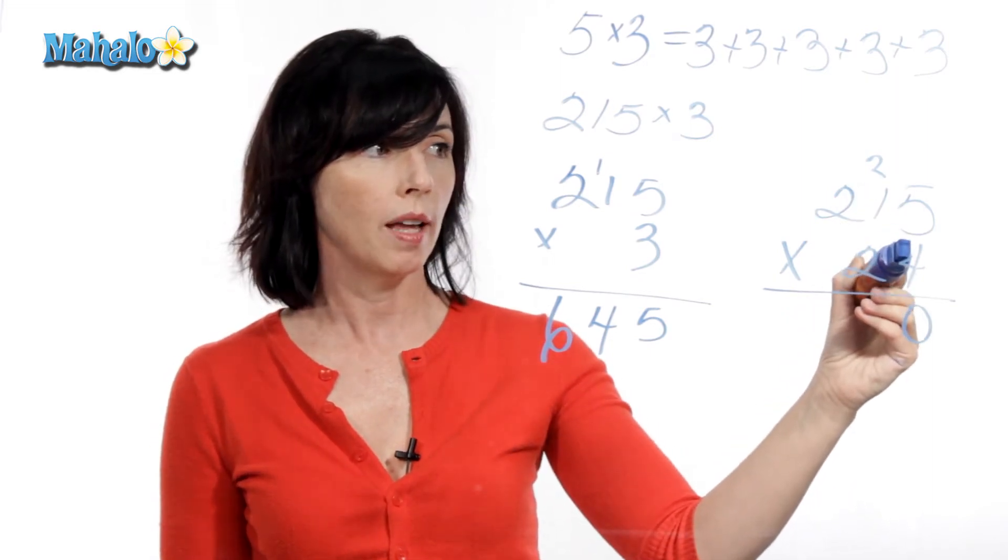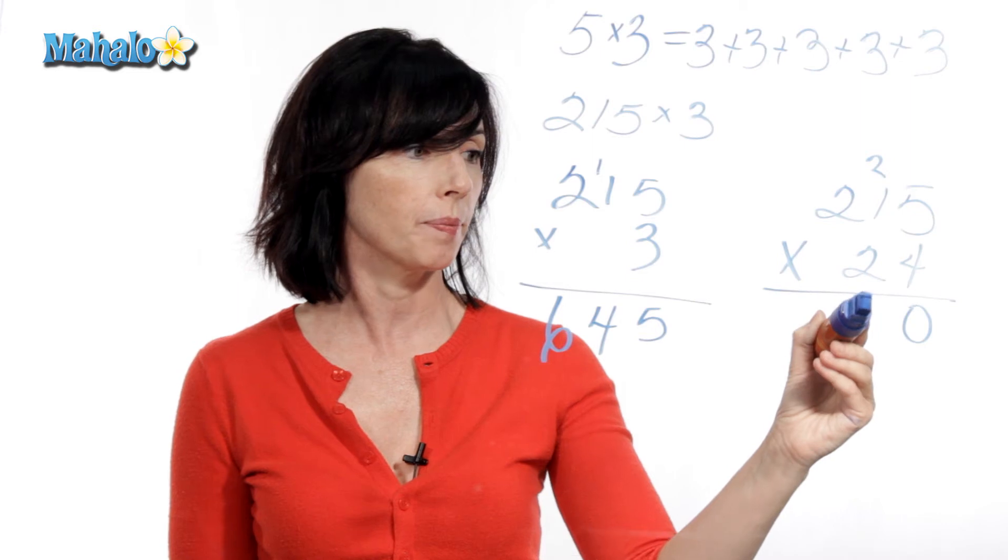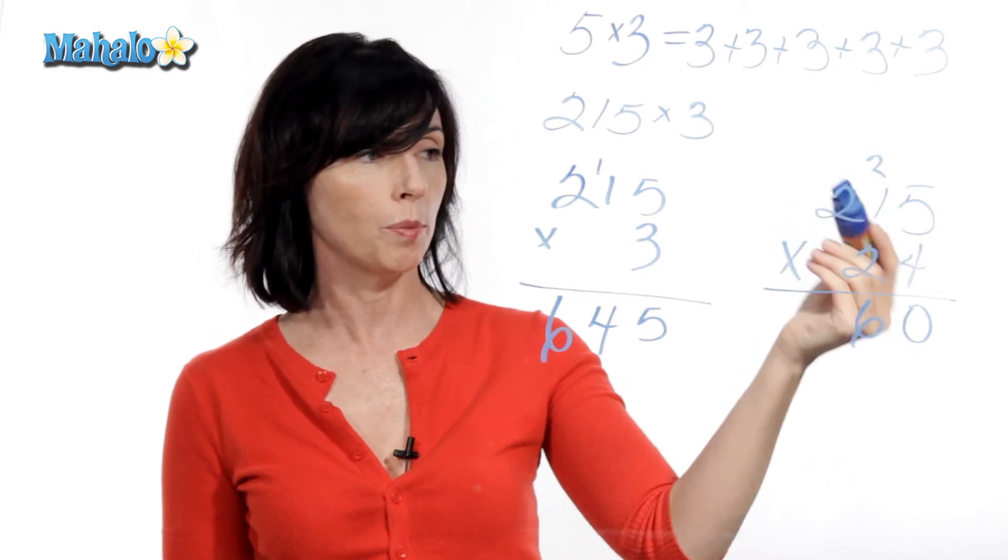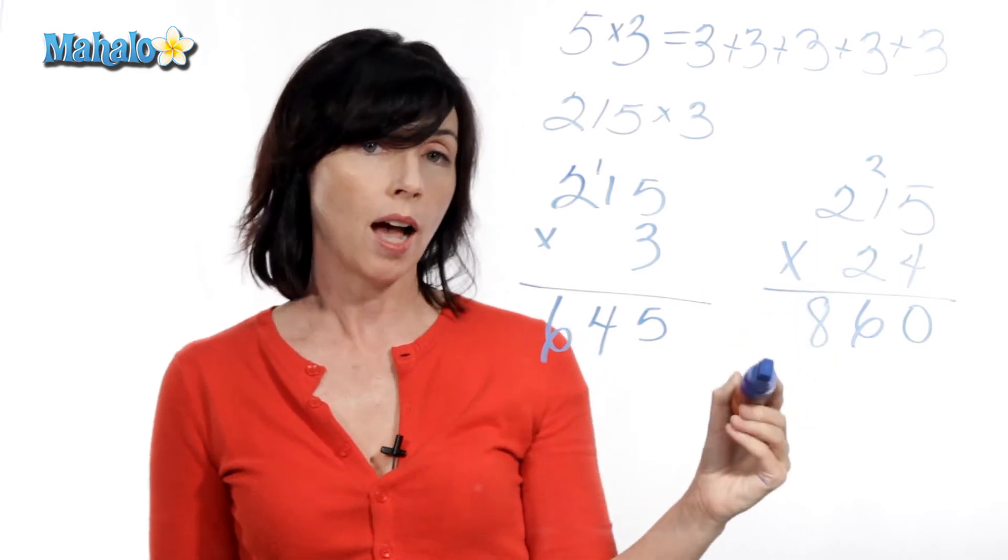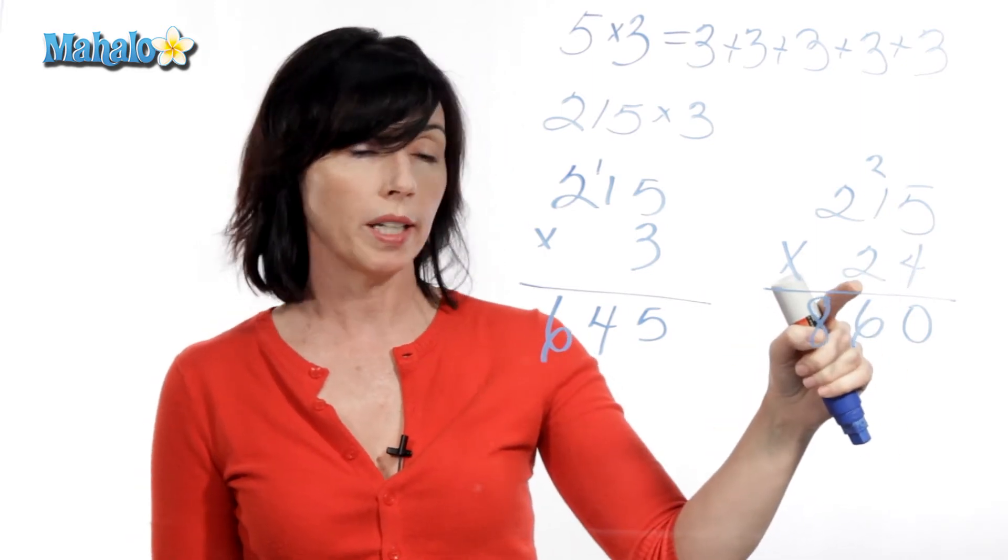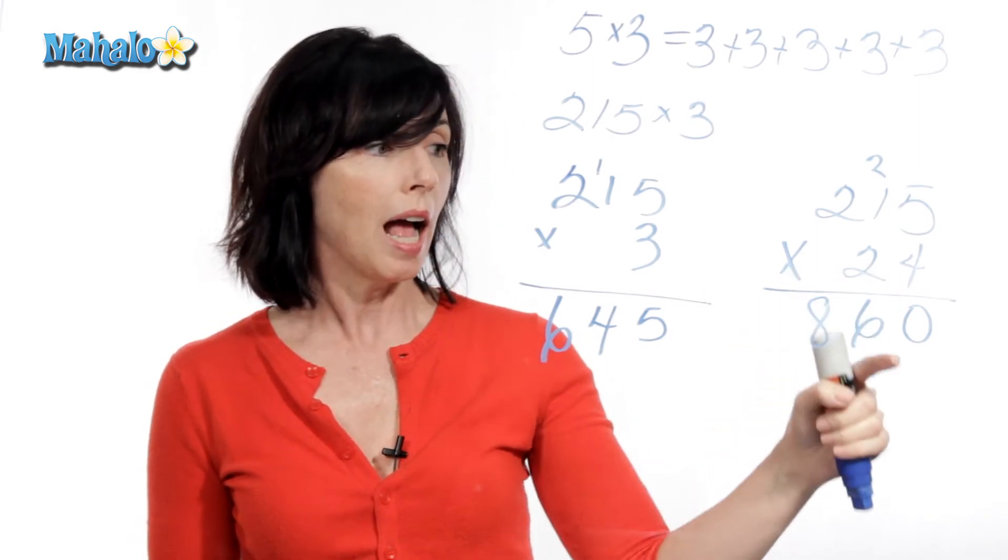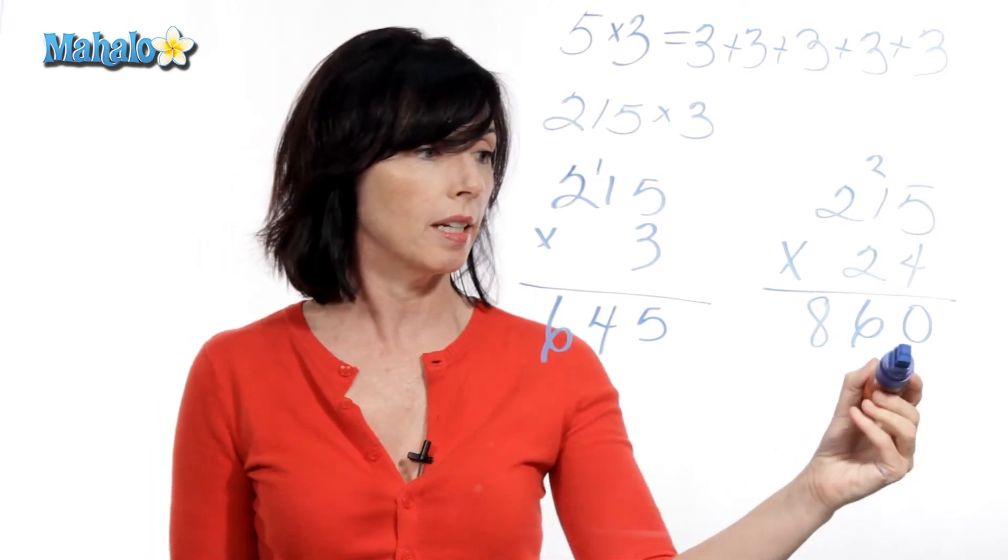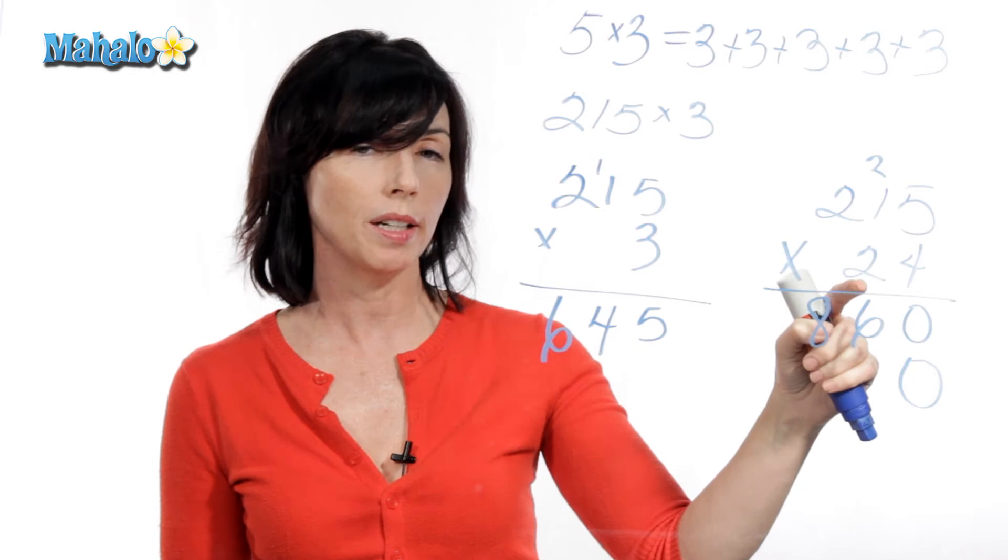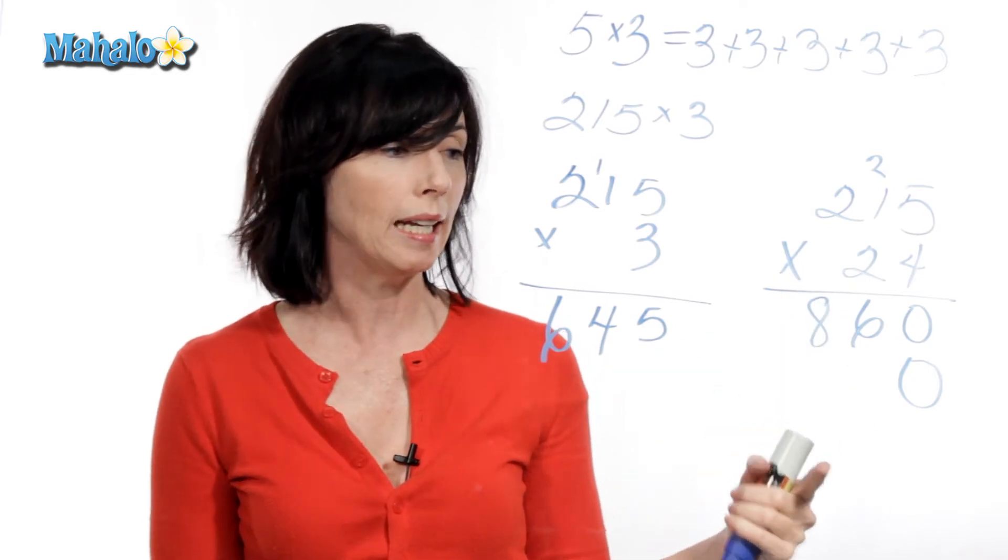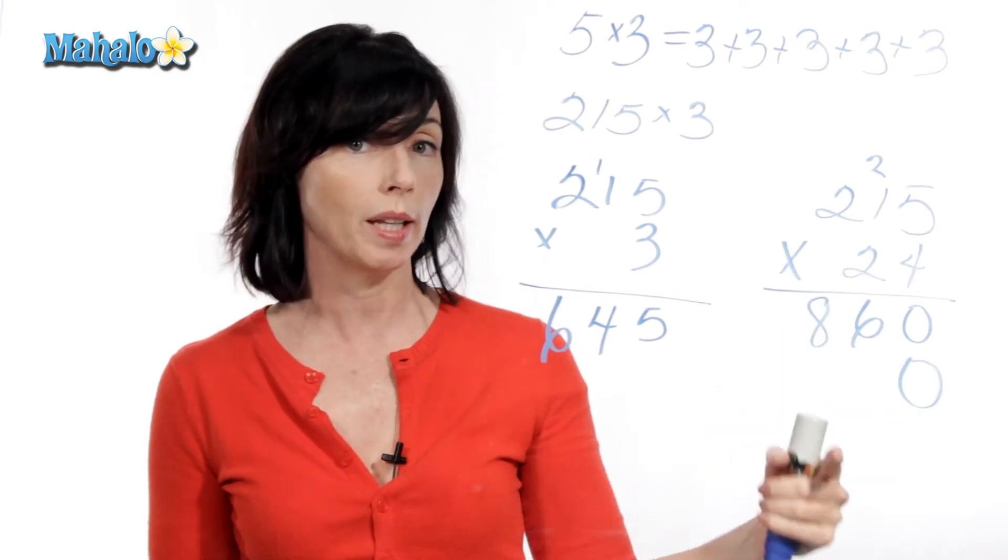One times four is four, and four plus two is six. And then we go over one more column, two times four is eight. Now, since we're going to move over here and do the multiplication here, I need to put a placeholder here, a zero. That's because we're not really multiplying by two here, we're really multiplying by 20. So putting this zero down here will account for that.